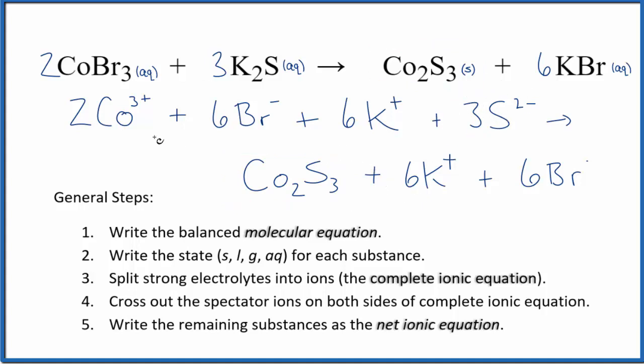So this is our complete ionic equation. Now we can cross out the spectator ions. They're on both sides. In the top here, the reactants, I can see I have six bromide ions. I also have those in the products. Spectator ions, we cross them out. Six potassium ions, again in the product, six potassium ions, cross them out.